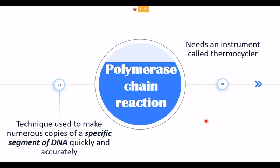What is a polymerase chain reaction? It is a technique used to make numerous copies of a specific segment of DNA — quickly and accurately. You are not going to amplify the entire sequence; you are going to amplify only a specific segment or region of DNA. This is the main important aspect of the polymerase chain reaction.